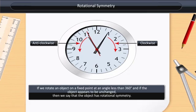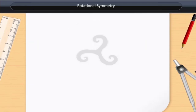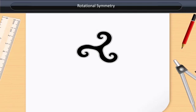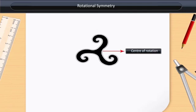When we rotate an object on a fixed point at an angle less than 360 degrees, and if the object appears to be unchanged, then we say that the object has rotational symmetry. For example, if we rotate it at an angle of 120 degrees and it appears unchanged, it has rotational symmetry. The fixed point about which we rotate the object is called the center of rotation, and the measure of the angle at which it has been rotated is called the angle of rotation — the smallest angle at which an object rotates and still looks the same.